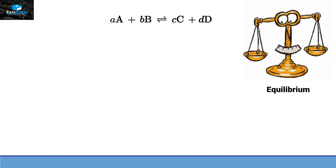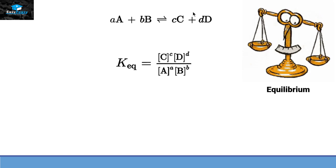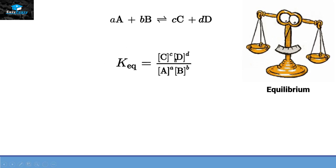In order to find the equilibrium constant of this reaction, we use this equation. The equilibrium constant includes the concentration of the products divided by the concentration of the reactants.